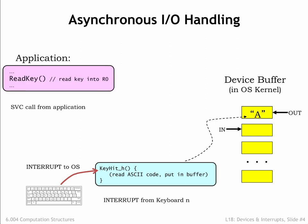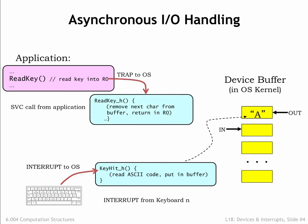At some later time, a user-mode program executes a read-key supervisor call requesting that the OS return the next character in R0. In the OS, the read-key supervisor call grabs the next character from the buffer, places it in the user's R0, and resumes execution at the instruction following the SVC.